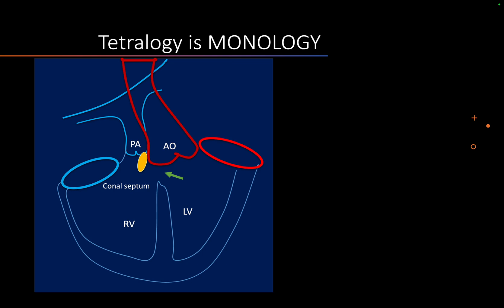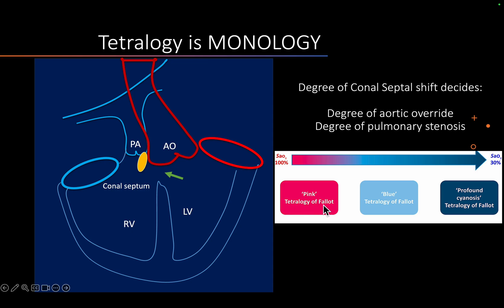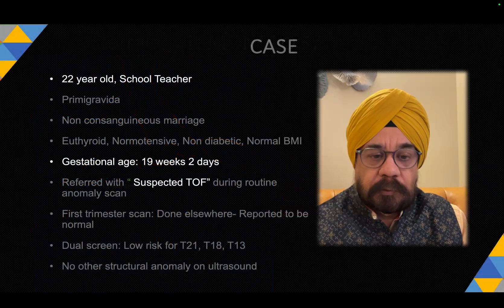The severity depends upon the shift of the conal septum. More the shift, narrower is the pulmonary artery and more is the aortic override. More shift towards the right side means more severity, more override, and smaller PA. Lesser the conal shift, lesser the aortic override and larger is the pulmonary artery - what we call the pink tetralogy of Fallot. At the extreme end, the conus is quite shifted making the pulmonary artery very small. So conal shift decides the severity of tetralogy of Fallot.